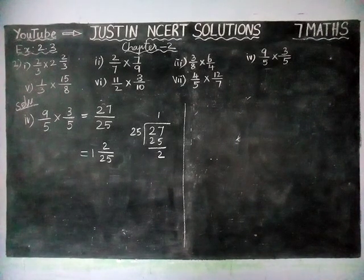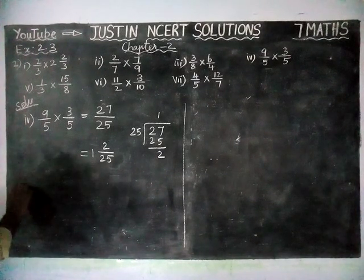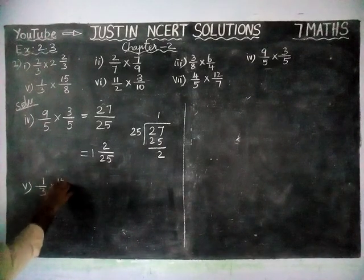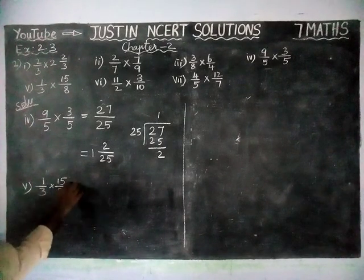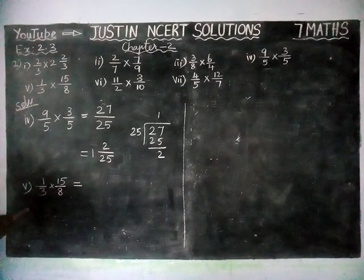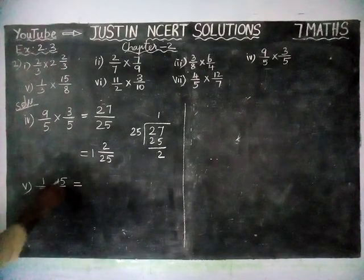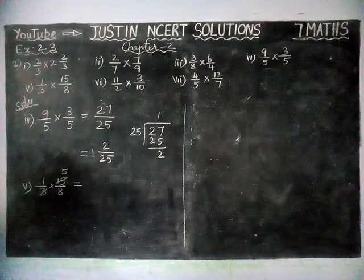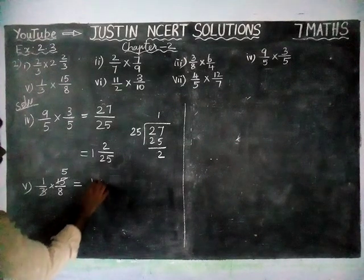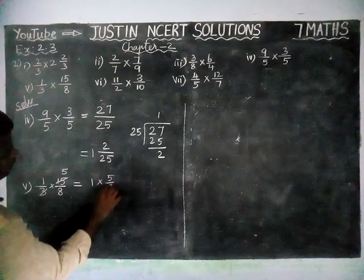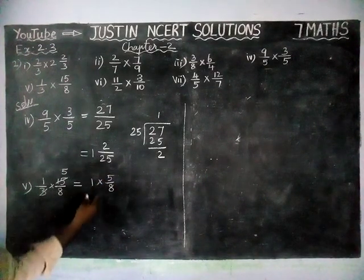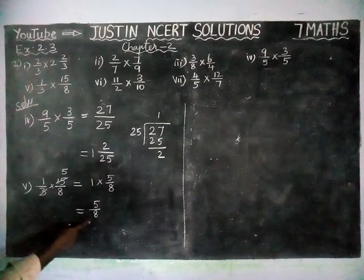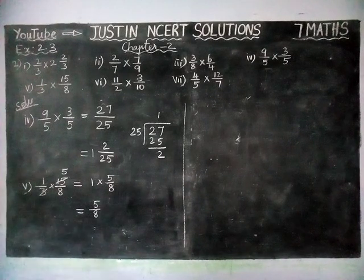Next, fifth question: 1⅓ × 15/8 is equal to. If it is possible to simplify, we can simplify. Here there is a common divisor 3: 1 × 3 = 3, and 5 × 3 = 15, so we cancel 3. Now we get 1 × 5/8. Multiplying by 1 gives the same answer: 5/8. This is already a proper fraction, so 5/8 is the answer for the fifth question.